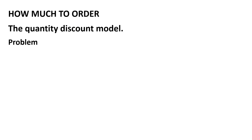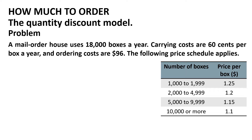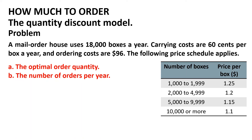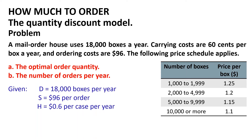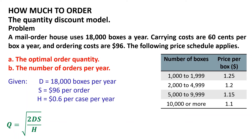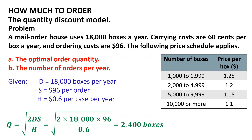Let us now solve a problem. A mail order house uses 18,000 boxes a year. Carrying costs are 60 cents per box per year, and ordering costs are $96. The following price schedule applies. Determine the optimal order quantity and the number of orders per year. The givens are: D = 18,000 boxes per year, S = $96 per order, H = $0.60 per box per year. The first step is to find the common minimum Q equals the square root of 2 multiplied by D multiplied by S divided by H. Substituting: Q equals the square root of 2 multiplied by 18,000 multiplied by 96 divided by 0.6, which equals 2,400 boxes.